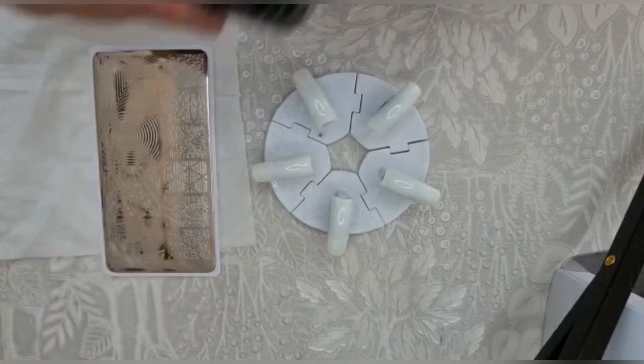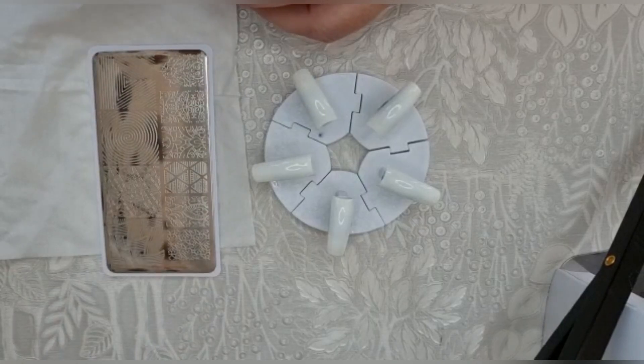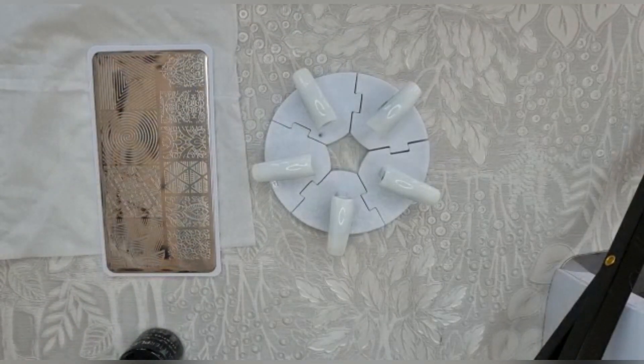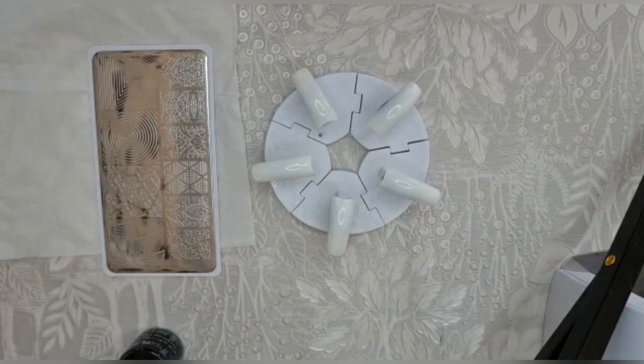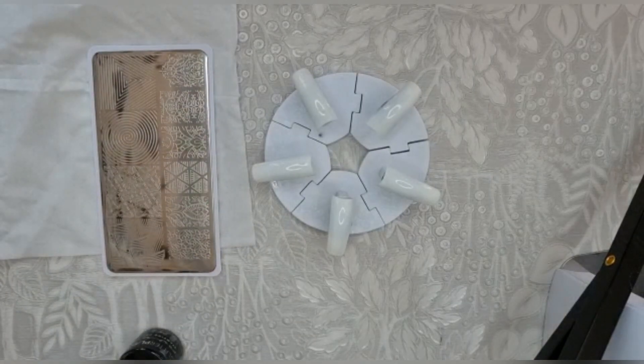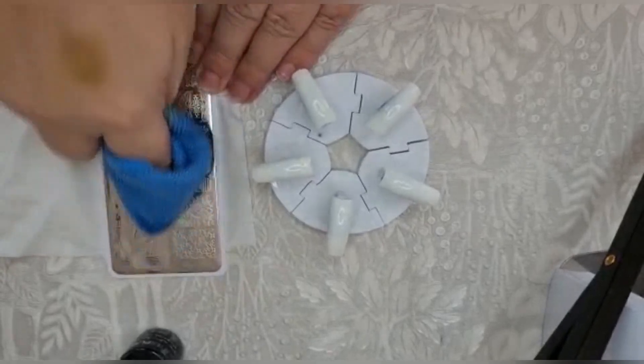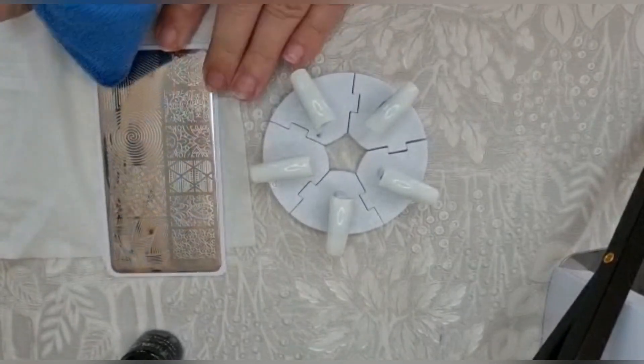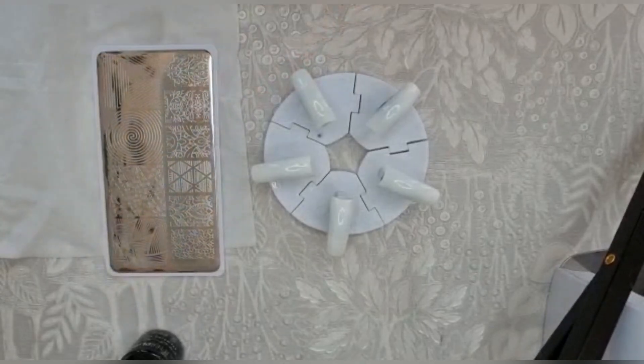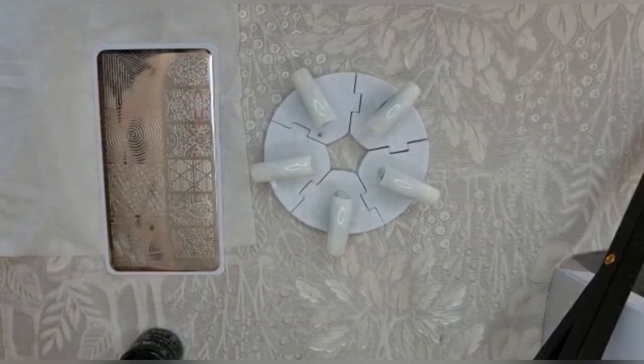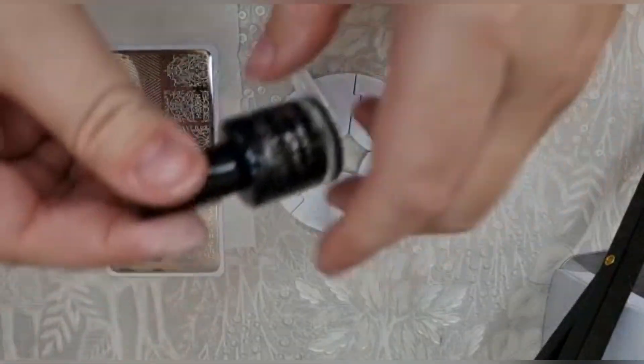So I'm going to get my Glitter Planet stamping polish. Actually, before I start I'll just get some acetone and wipe the plate. I think that might help because last time I tried stamping, the first one didn't do very well, but once I'd wiped it with acetone it seemed to be better.